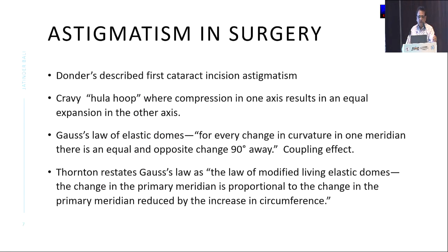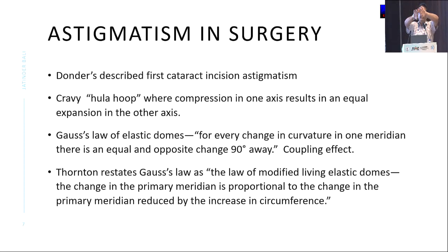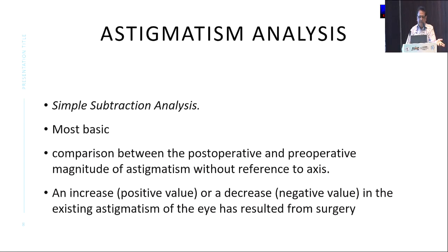It was Donders who first described cataract incision astigmatism. Crabi said that it's like a hula hoop — you press one side, and at 90 degrees to it, it extends. The hula hoop is not just the hoop; the entire dome is going to have the same effect. So we have the law of the elastic domes, which has been described by many people in many ways. So how do we go about calculating and evaluating statistically the surgically induced astigmatism?